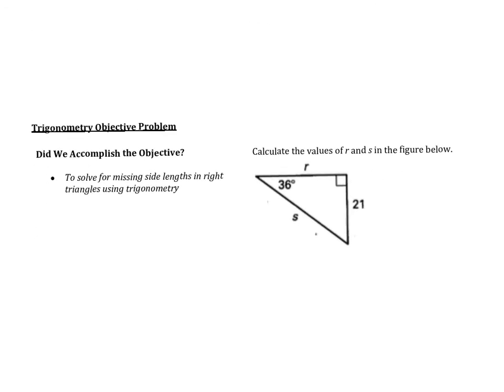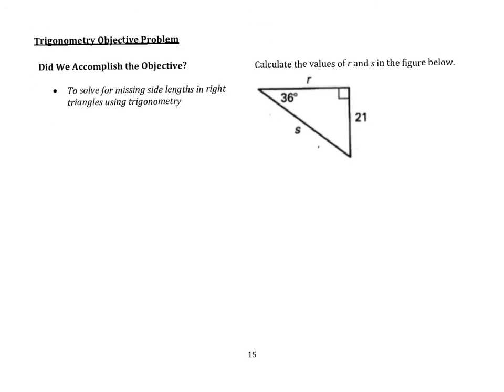The objective problem is at the bottom of the page. We need to solve for the missing side lengths. So you need to solve for both R and S. Please start by labeling your sides, your O, A, and H. I'll tell you, this one is the O. You should be able to figure out A and H from there. In order to get credit for this video, you will need to have work shown and two answers, one for R and one for S. Good luck.